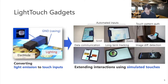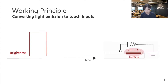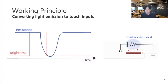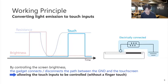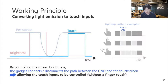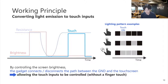Let me explain the working principle. In this example, the brightness of the touch screen is increased for a moment. At this moment, the LDR acts as a switch to connect the path between the ground and touch screen, and then the touch input is simulated. Light Touch Gadget can perform any touch inputs by controlling the screen brightness.